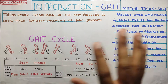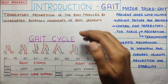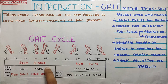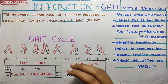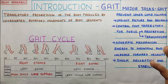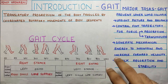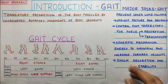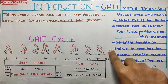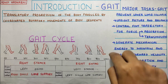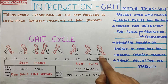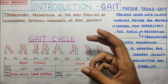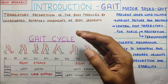Let's quickly summarize what we saw. The definition: gait is a translatory progression that happens with coordinated rotatory movements. The gait cycle has two phases — stance phase and swing phase — which are further subdivided, to be covered in depth in the next video. The major tasks are: first, preventing collapse of the lower limb; second, maintaining upright posture and balance; third, force absorption during heel strike and pushing off the ground to propel further; and fourth, constantly generating mechanical energy to maintain and increase walking velocity.